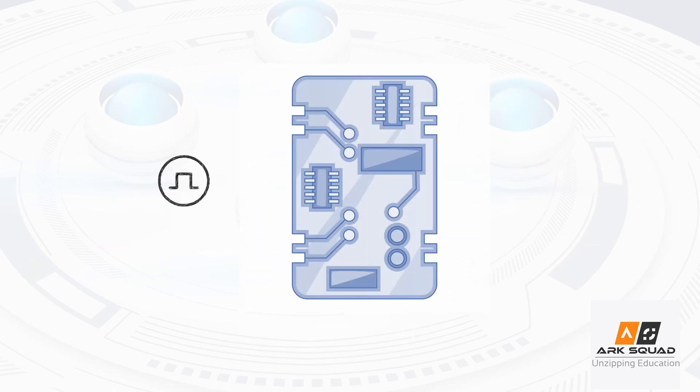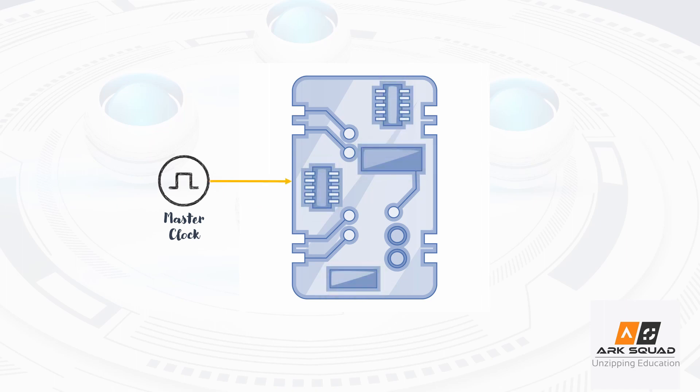For every clock pulse, the circuit operates and generates an output. If there is no clock pulse, the circuit will not operate and it won't produce any output.